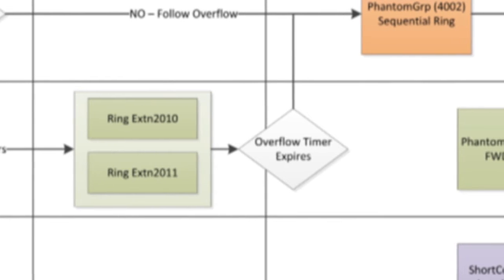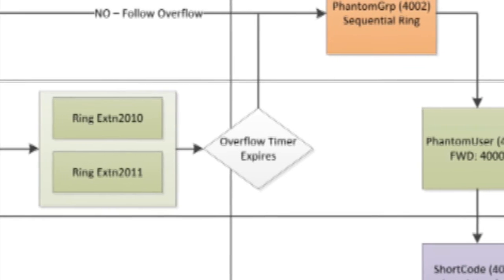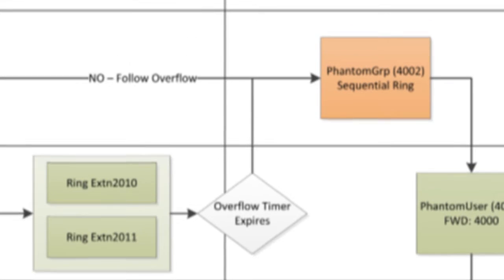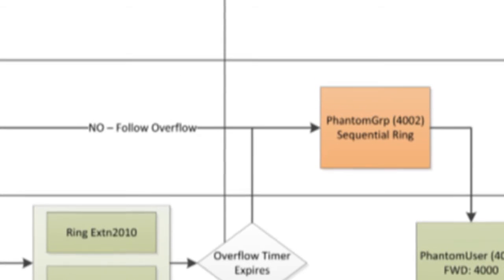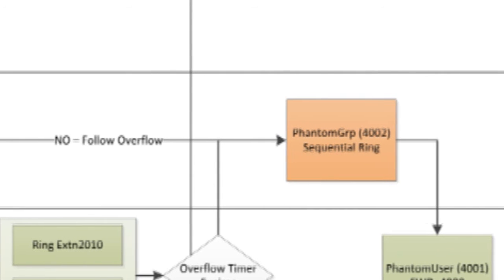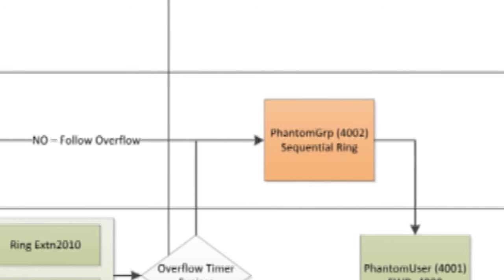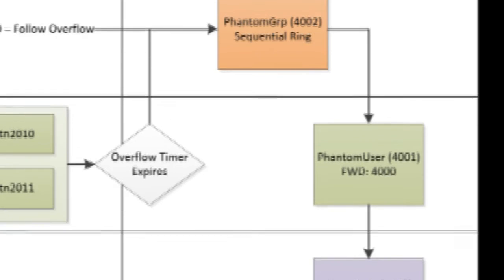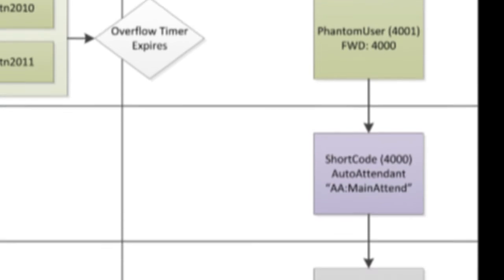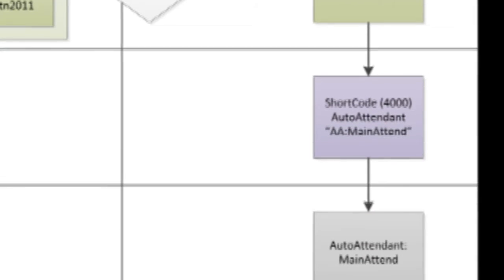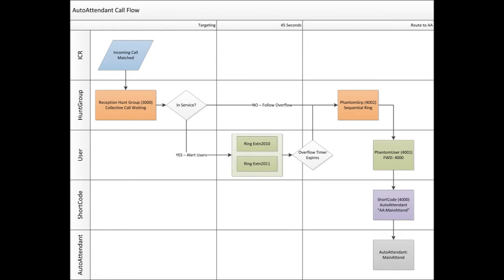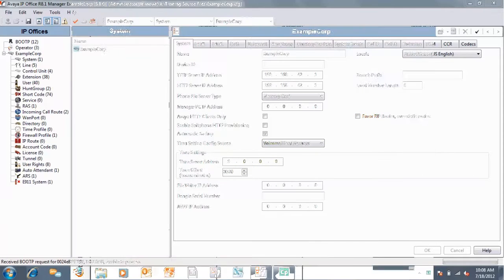Next, once that overflow timer expires, we're going to forward the group onto another hunt group using the overflow. That overflow timer is going to ring our phantom group, 4002. It has one user in it. That phantom user then forwards to a short code and then onto the auto attendant. So let's take a look at how we actually do that programming, and then we'll add a hook in there for out-of-service routes as well.